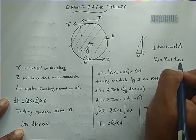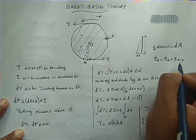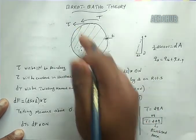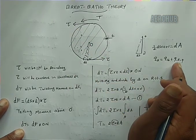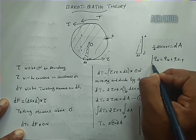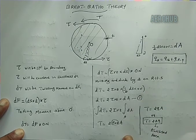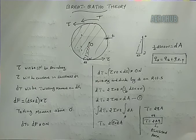In the last lecture we discussed the shear of closed section beams, where q_s = q_b + q_s0. We find the value of Q_s0 by taking the moment about a point for the section, and we use the Bredt-Batho formula to find Q_s0 — the shear flow at the position of the cut. That's all for this lecture; numerical problems will be discussed in further lectures. Thank you so much, please do subscribe to the channel.